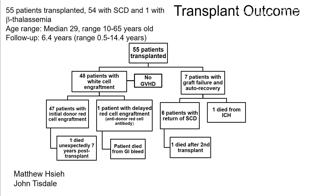This study is being run by Matthew Shea and John Tisdale at the NIH. I'm going to talk about the results of the first 55 patients transplanted: 54 had sickle cell disease and one had beta-thalassemia. The median age was 29 years with a range of 10 to 65 years, and the median follow-up was about 6.5 years, with the first patient transplanted over 14 years ago. Of the 55 patients, 48 initially had white cell engraftment, and importantly, we have not seen any graft-versus-host disease on this protocol.